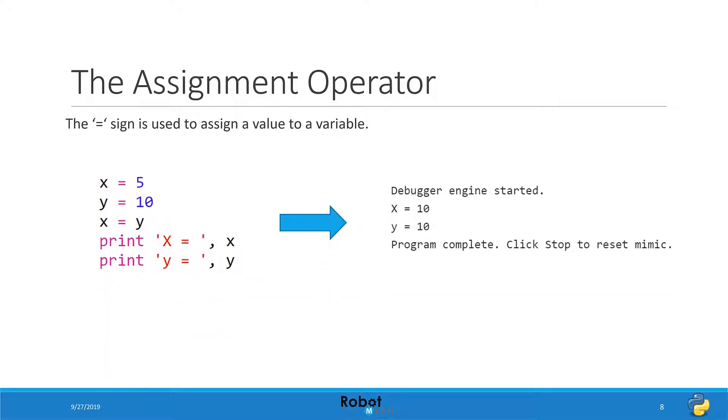To assign a value to a variable, we use the equal sign. It's also known as the assignment operator. Here we have a variable named x and another named y, and then we assign x to the value held in y. As a result, when we go to print the values of both variables, we will get 10 as the answer for both x and y.